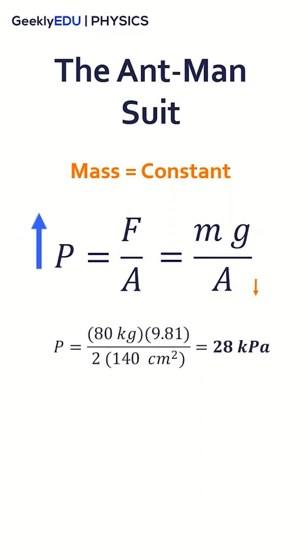If we calculate the pressure for an 80-kilogram man, where his shoes have an area of 140 square centimeters each, we would get an average pressure of 28 kilopascals.